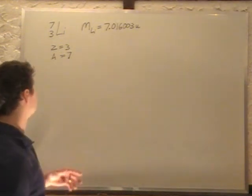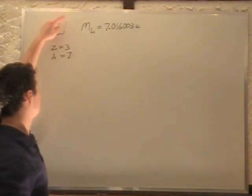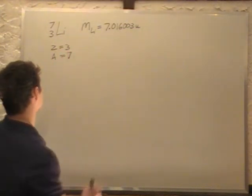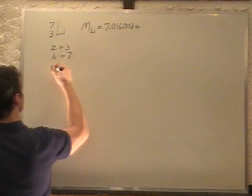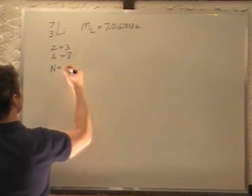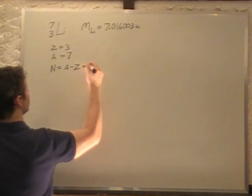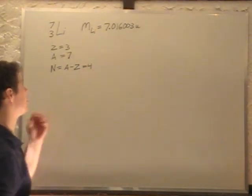And then we generally, unless this is a plus or a minus here, we generally have the same amount of electrons as protons. So, we can say N, our number of neutrons, equals A minus Z, which is equal to 4. So, we have 4 neutrons in this nucleus.